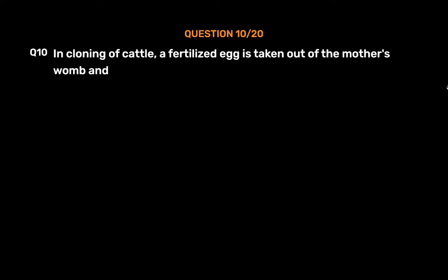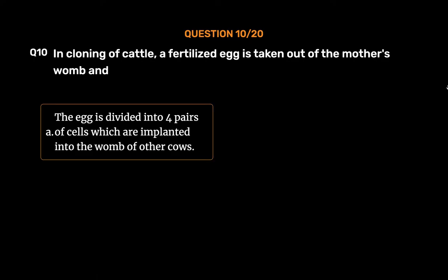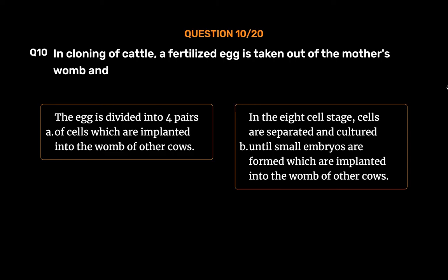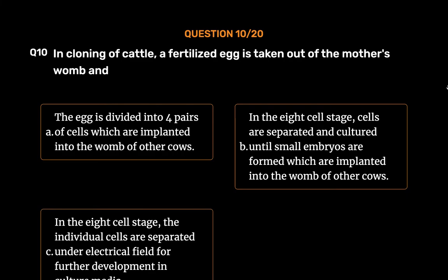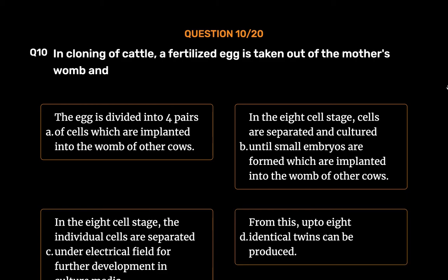Question 10: In cloning of cattle, a fertilized egg is taken out of the mother's womb and — Option A: The egg is divided into four pairs of cells which are implanted into the womb of other cows. Option B: In the eight-cell stage, cells are separated and cultured until small embryos are formed which are implanted into the womb of other cows. Option C: In the eight-cell stage, the individual cells are separated under electrical field for further development in cultured media. Option D: From this, up to eight identical twins can be produced.